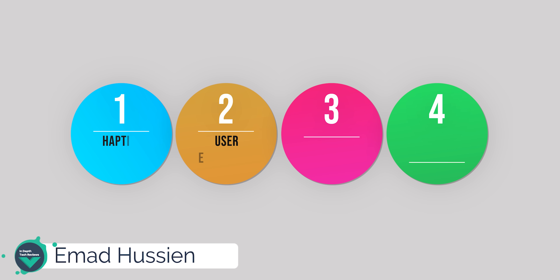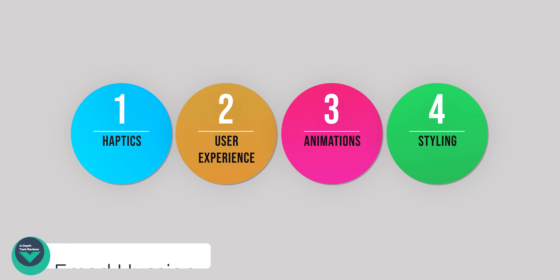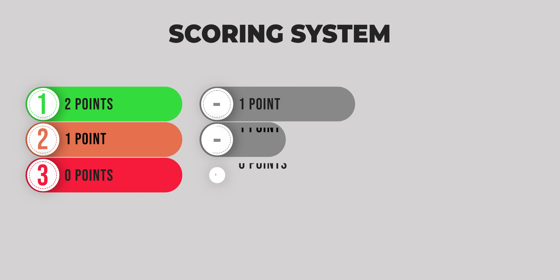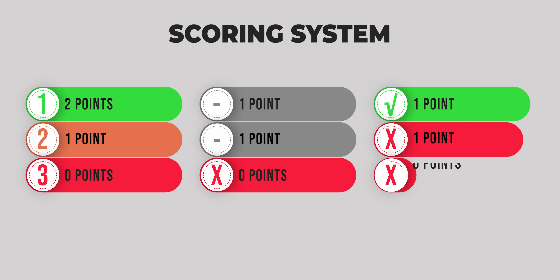This video will include four main categories: haptics, user experience, animations, and styling. The scoring system will be as follows: the winner will get two points, second place will get one point, and zero points for third. If it's a tie between two operating systems, each one will take a point and zero for the third. If it's exclusive to one OS, it takes a point and zero for the rest.